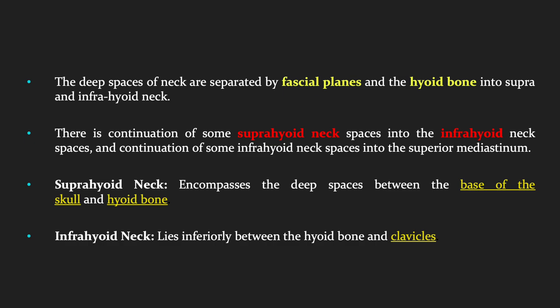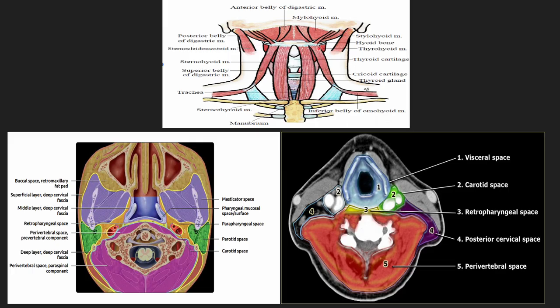The deep neck spaces are separated by the fascial planes and the hyoid bone into the suprahyoid and the infrahyoid neck. There is continuation of some suprahyoid neck spaces into the infrahyoid neck space and continuation of some infrahyoid neck spaces into the superior mediastinum. The suprahyoid neck encompasses the deep spaces between the base of the skull and the hyoid bone, whereas the infrahyoid neck lies between the hyoid bone and the clavicles. The hyoid bone acts as a landmark and divides the deep neck spaces into the suprahyoid and the infrahyoid compartment.